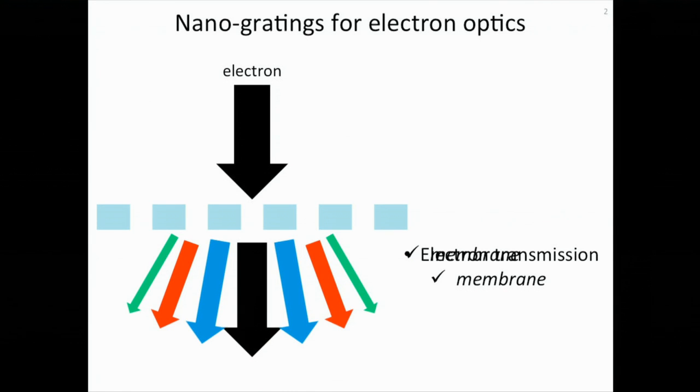Today I'm going to focus on nanogratings for electron diffraction. A nanograting is a periodic structure, and due to the wave nature of the electron, an incoming electron beam can be diffracted into multiple beams. There are some requirements on this periodic structure. First, an electron has very small wavelengths, so we need to use nanofabrication technique to make a small period nanograting. Also, the electron has to transmit through this nanograting, so we need to make the structure out of a very thin membrane to make sure it is electron transmissive.